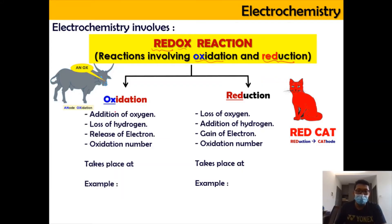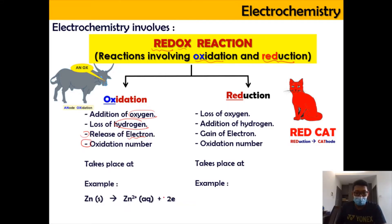For oxidation, it involves the addition of oxygen or the loss of hydrogen. However, in electrochemistry, we're going to focus more on the release of electrons and the change in oxidation number. For oxidation, zinc is oxidized to form Zn²⁺ and 2 electrons. The oxidation number of zinc increases from 0 to +2, and oxidation happens at the anode. You can remember this as 'An-Ox' — oxidation happens at anode.